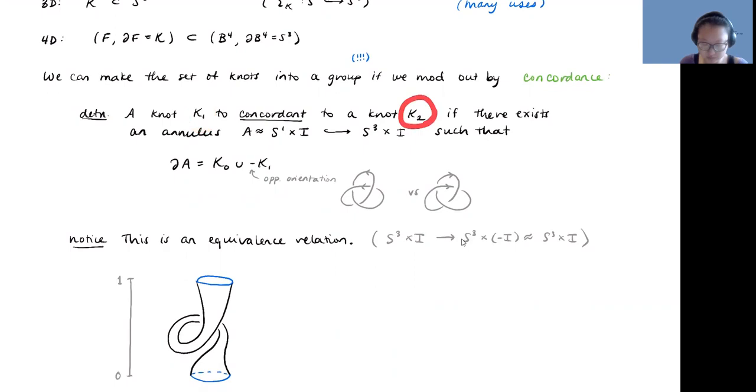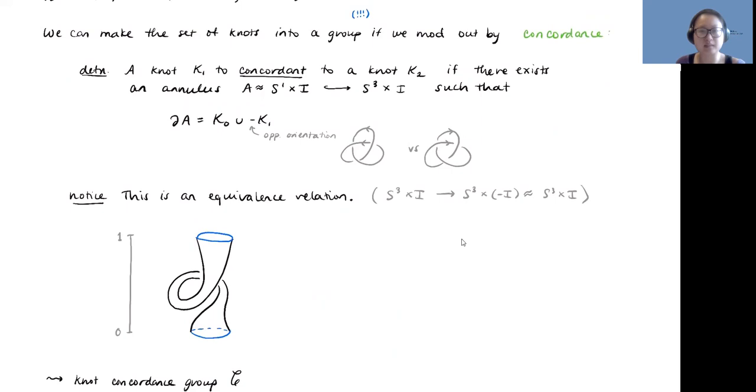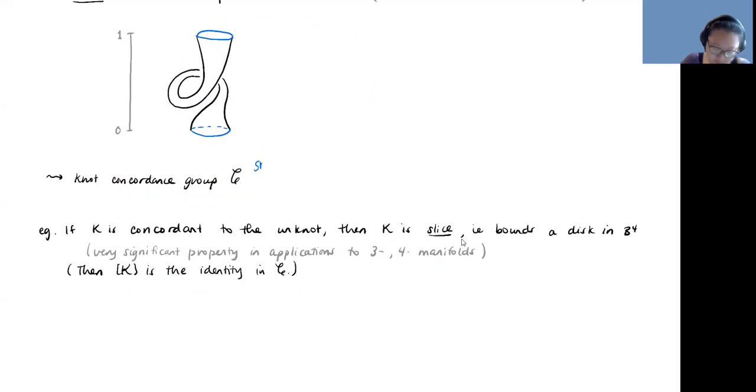And using this point of view, we can actually make the set of knots into a group, which is extremely exciting because this is so much more structure than we would probably automatically assume would happen with something so topological. So what we need to do is mod out by concordance. You're basically just connect summing. But once you mod out by concordance, there are actually going to be knots that are equivalent to the unknot, whereas they weren't previously in S3. So a knot K1 is concordant to a knot K2 if in the fourth dimension, you can basically draw some kind of cylinder that connects them. This is an equivalence relation, because if you flip my cylinder upside down, I still have a cylinder. So two knots are just concordant to each other.